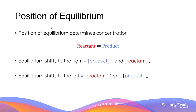Before we go through each of the changes, I want to discuss the idea of equilibrium position. The position of equilibrium determines the concentration of reactants and products in a reversible reaction. In Le Châtelier's Principle, when we talk about the movement of equilibrium, we are really referring to the relative concentration of reactants and products. For example, if we say that the equilibrium shifts or moves to the right-hand side, that means the concentration of the product, which is on the right-hand side of the reaction, increases.